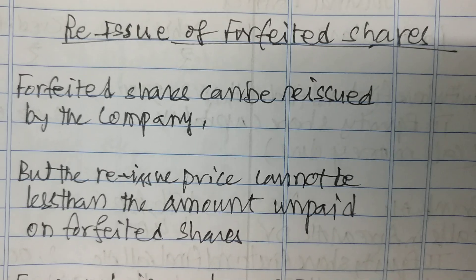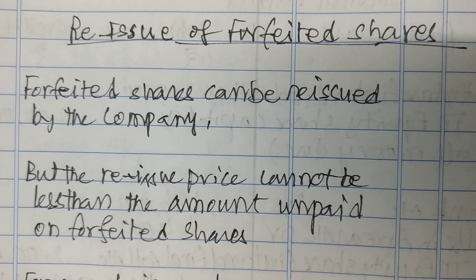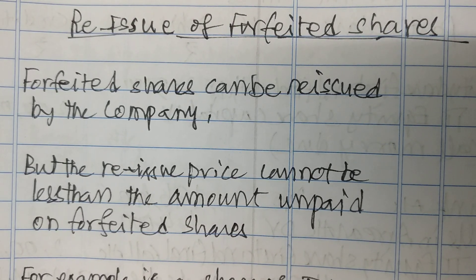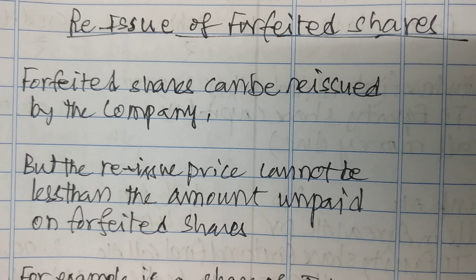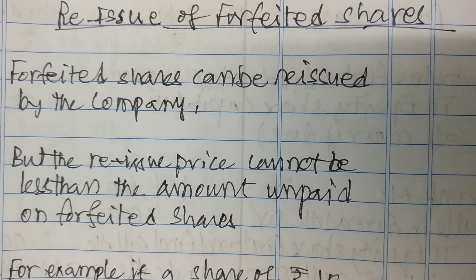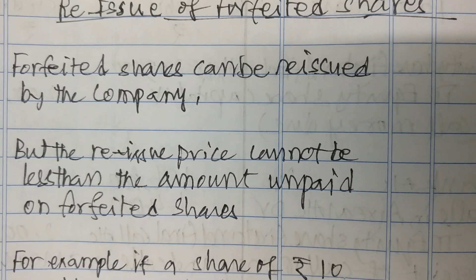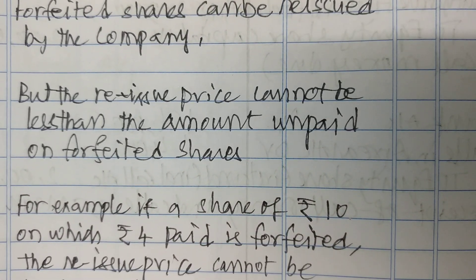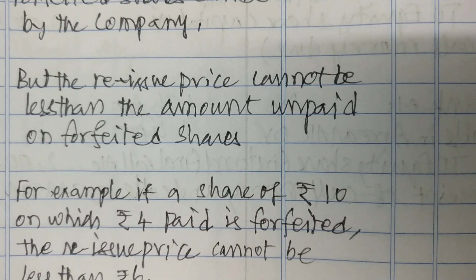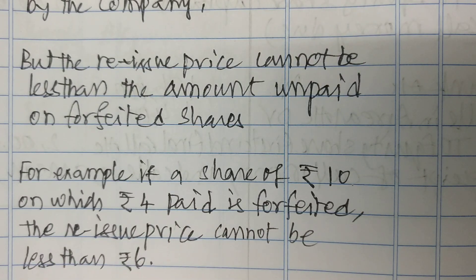Forfeited shares can be reissued by the company. But the reissue price cannot be less than the amount unpaid on forfeited shares. For example, if a share of Rs.10 on which Rs.4 is paid is forfeited, the reissue price cannot be less than Rs.6.